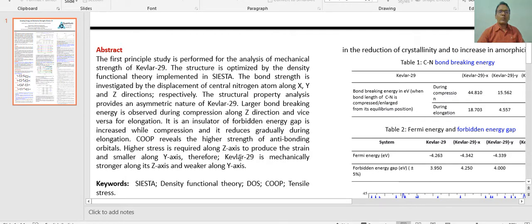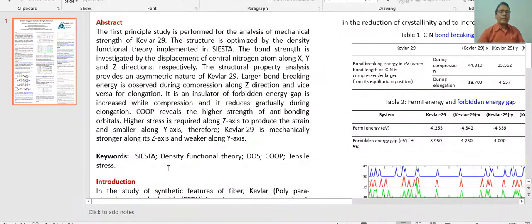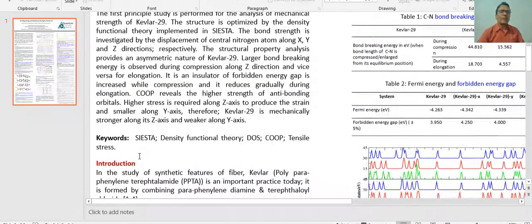The higher stress is required along Z-axis to produce the strain and smaller along Y-axis. Therefore, Kevlar 29 is observed mechanically stronger along its Z-axis and weaker along Y-axis. One can say this Z-axis is longitudinal because it is along its length, and X and Y axis is in transverse direction. So one can say this Kevlar 29 is mechanically stronger along its longitudinal direction and in transverse direction it is slightly weaker.